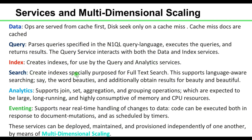The Search service creates specialized indexes used for full-text search — for example, searching the word 'beauties' can additionally return results for 'beauty' and 'beautiful'. Analytics supports join, set, aggregation, and grouping operations. Eventing supports near real-time handling of changes to data. These services can be deployed, maintained, and provisioned independently of one another — this is called multi-dimensional scaling.